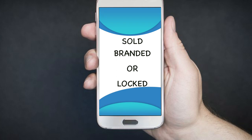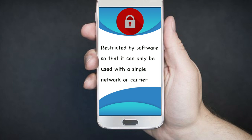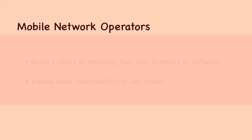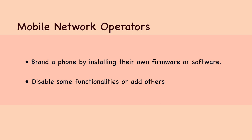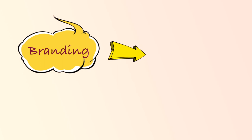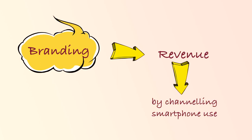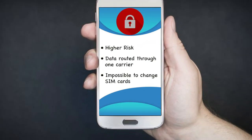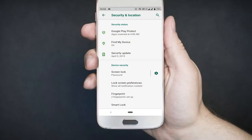Smartphones are usually sold branded or locked. Locking smartphones means that the device can only be operated with one carrier whose SIM card is the only one that will work in the device. Mobile network operators usually brand a phone by installing their own firmware or software. They may also disable some functionalities or add others. Branding is a means for companies to increase revenue by channeling your smartphone use. They often also collect data about how you are using the phone or by enabling remote access to your smartphone. For these reasons, we recommend that you buy an unbranded smartphone if you can. A locked phone poses a higher risk since all your data is routed through one carrier, which centralizes your data streams and makes it impossible to change SIM cards to disseminate the data over different carriers.